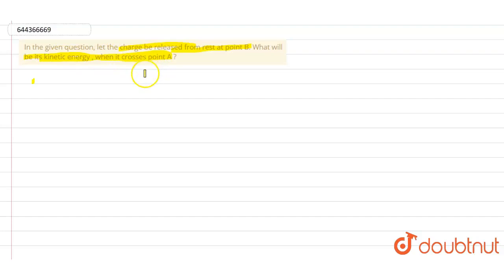Have any kind of diagrams for this particular question. It's just given that the charge is released from rest from point B, and what is the kinetic energy we are asked to find when it crosses point A. So this is the question. From this question, I can say...